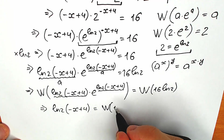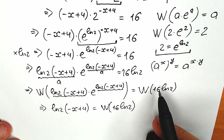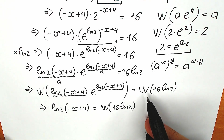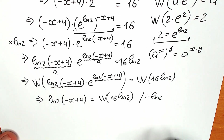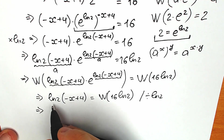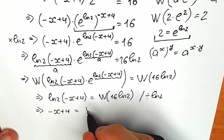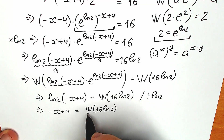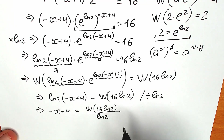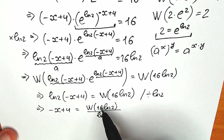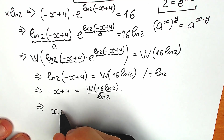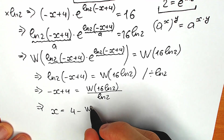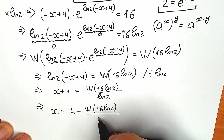From the Lambert W function of 16 natural log 2 — don't be scared, this is just a constant, and the Lambert W function of a constant is also a constant. Now let's solve for x. Dividing both sides by natural log 2, we cancel natural log 2 on the left, giving minus x plus 4 equals W of 16 natural log 2, divided by natural log 2. Note we can't cancel the natural log 2 inside the Lambert W argument. Therefore x equals 4 minus W(16 natural log 2) divided by natural log 2.